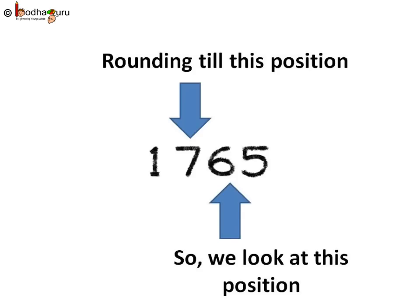So when rounding a number till a certain position, just look at the position to its right. Here we want to round the number to the nearest 100. So we look at 10's place, which has the digit 6.